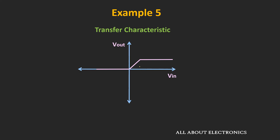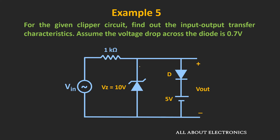Let's find out the transfer characteristic for the given circuit. Here, it has been given that the forward voltage drop across the diode is equal to 0.7V. So this particular diode will conduct whenever the voltage at this end is equal to 5 plus 0.7 — that is 5.7V. Similarly, this Zener diode has a breakdown voltage of 10V, so it will provide a constant voltage whenever the voltage between these two terminals is greater than 10V. Under forward bias condition, the voltage drop across the Zener diode will be equal to 0.7V. To find the transfer characteristic, let's divide the input voltage into four zones.